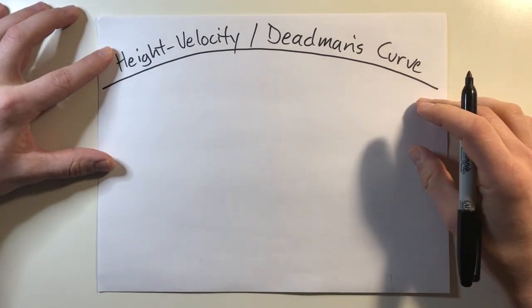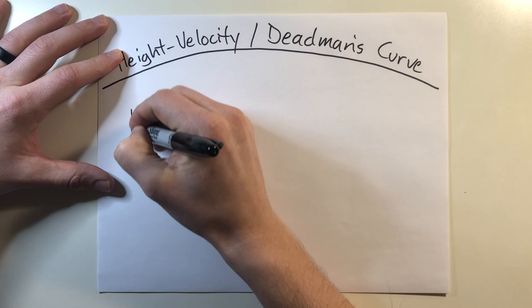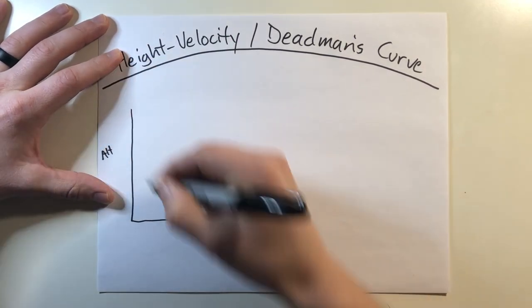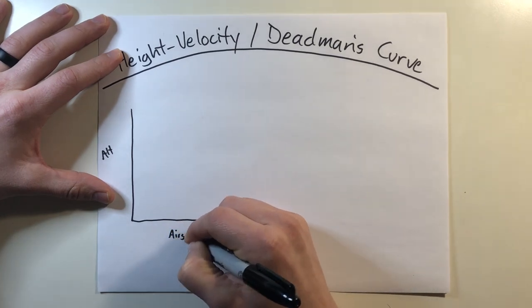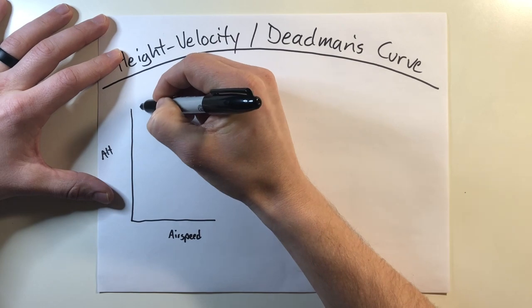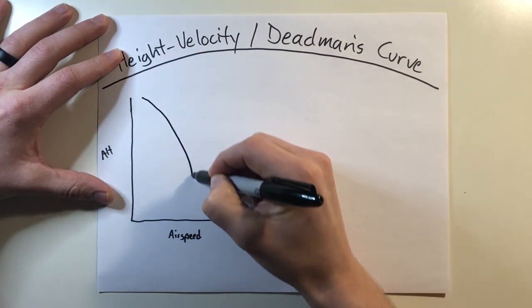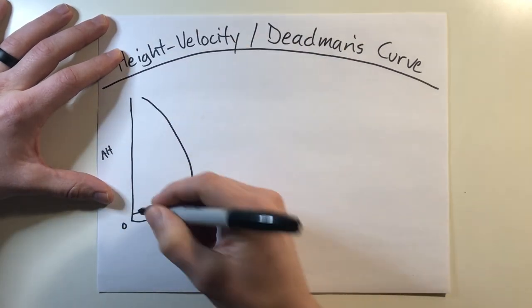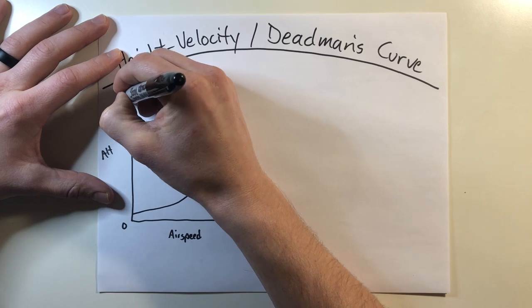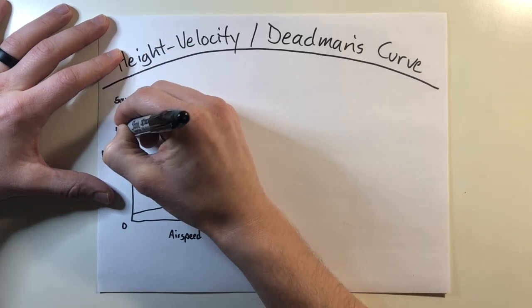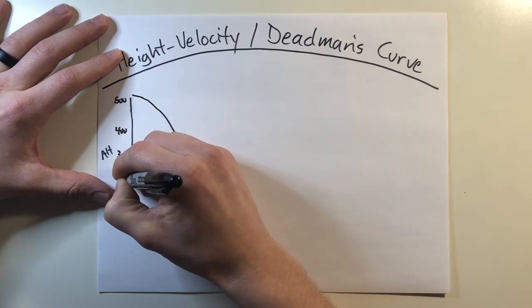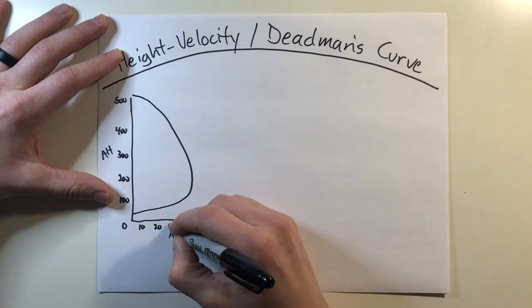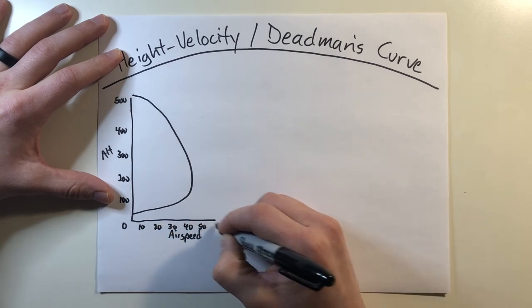Now just about every operator's manual has a diagram that looks something like this. On the left side you're going to have something that covers your altitude, on the bottom it's going to outline your airspeed, and then you're going to have some sort of curve that looks something like this. Here in the bottom let's say you have your zero for your altitude, going all the way up to say 500 feet or so, and down here, airspeed, 10, 20, 30, 40, so on and so forth, ticking up.